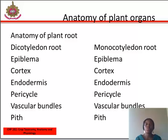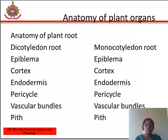Features of a dicotyledon root include: 1. Epiblema, which is the outermost layer comprised of tubular living components. Epiblema is also known as rhizodermis or proliferous layer. 2. Cortex, which is made up of parenchymatous cells; chloroplasts are absent, so they are non-photosynthetic. The cells of the outer parts of the cortex are suberized in old roots; this is called the exodermis.